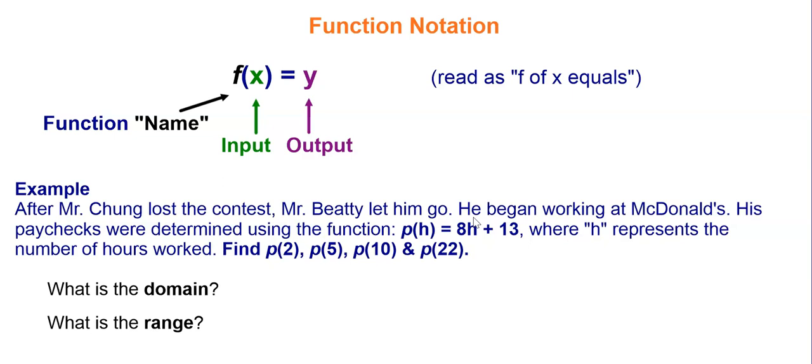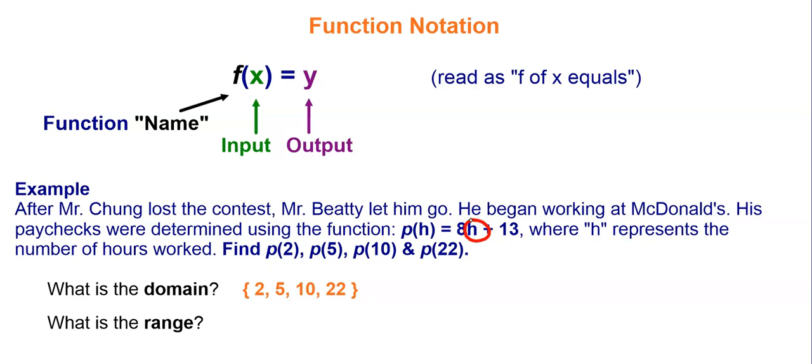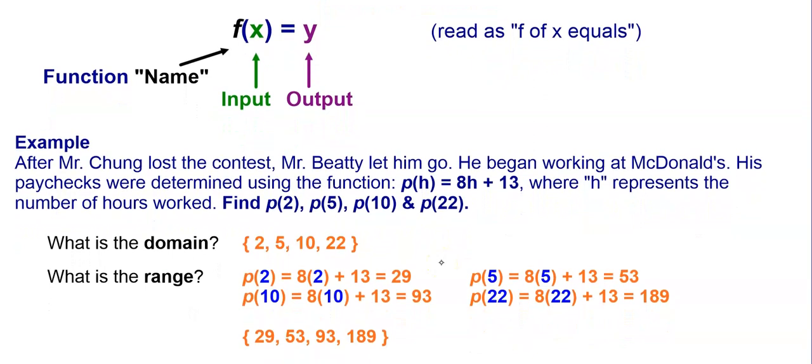So, what is the domain? Well, again, the domain is the input, and the input values are what's in parentheses. So, simply, the domain is 2, 5, 10, and 22. So, how do we find the range? Well, we take those input values, the 2, 5, 10, and 22, and we substitute them in for the h in our function. So, then we take 8 times 2 plus 13, 8 times 5 plus 13, 8 times 10 plus 13, and 8 times 22 plus 13. And we end up getting 29, 53, 93, and 189. Those are the amounts of his paychecks, so the range is 29, 53, 93, and 189.